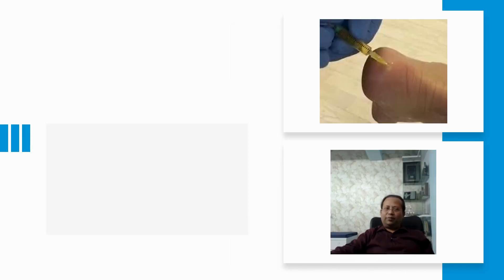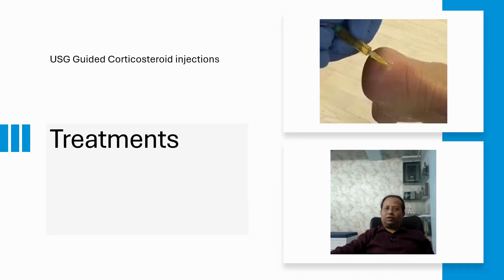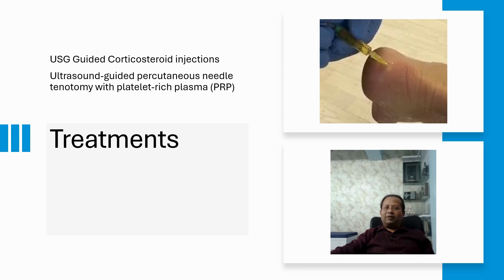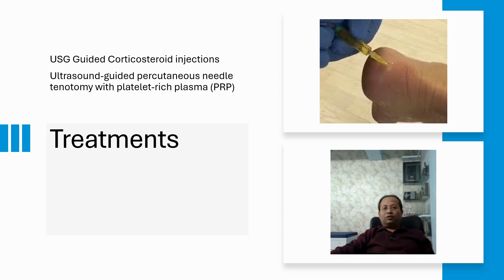As far as treatment is concerned, we have two main options — there are multiple options in the literature, but these two are time-tested and more widely practiced. The first option is ultrasound-guided corticosteroid injection, and the second is ultrasound-guided percutaneous needle tenotomy with platelet-rich plasma infiltration. Ultrasound is essential for both treatments to ensure the injection targets the correct pain generator.